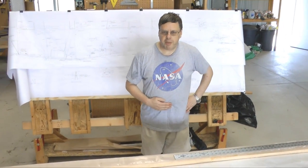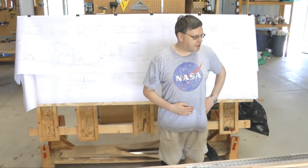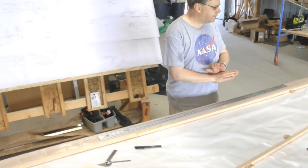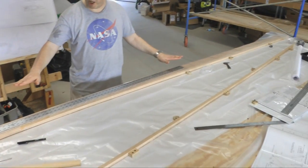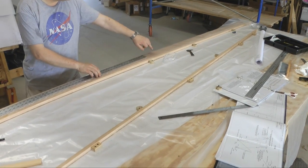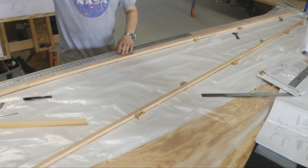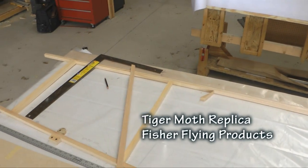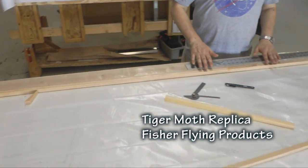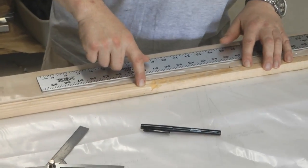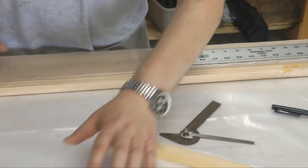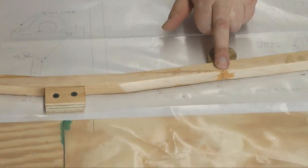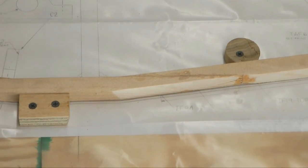The day before yesterday, I started on the fuselage. I have a 16-foot bench with a wood straight edge all the way along. The first thing I did was start with the longerons. Each one had to have a splice—one splice on the top, two splices on the bottom—to get both the length and the shape.